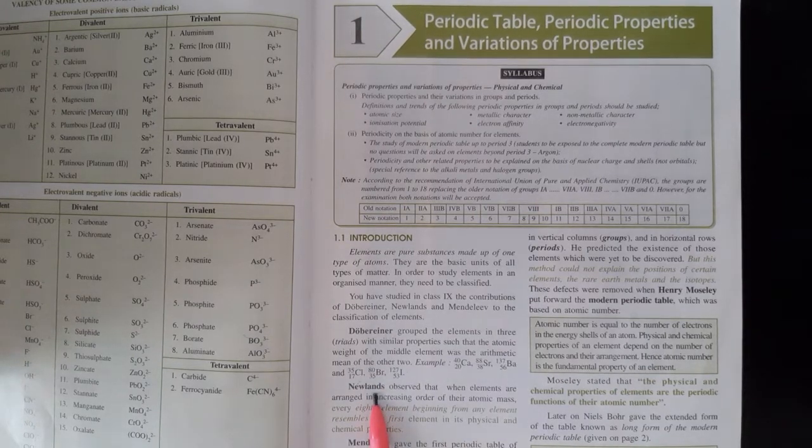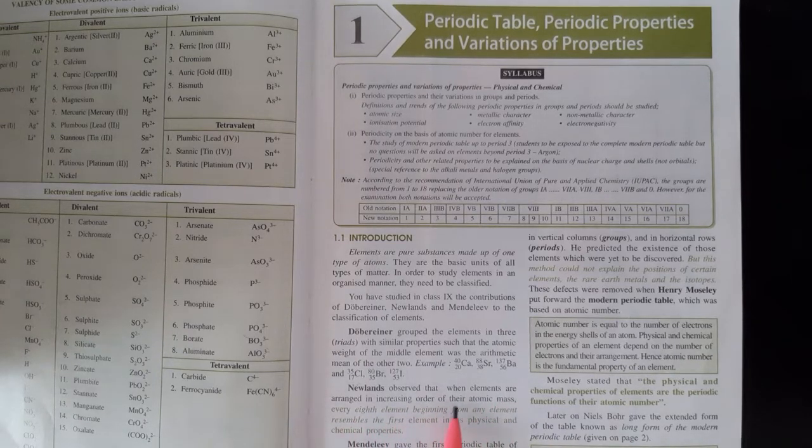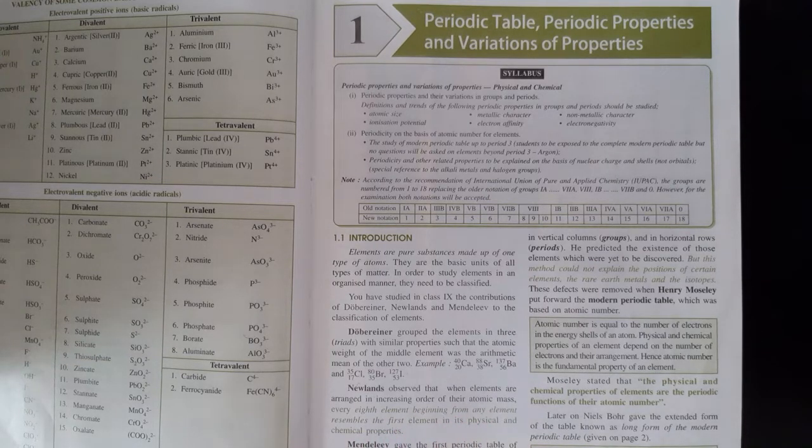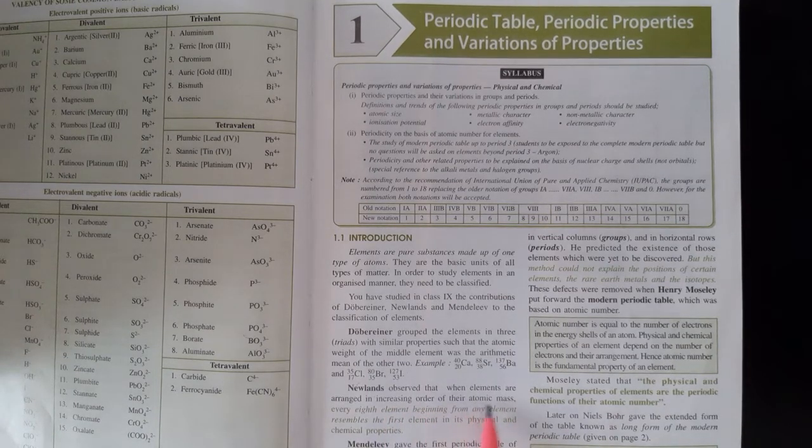Next, Newlands. Newlands observed that when elements are arranged in increasing order of their atomic mass - he saw that if we arrange elements in increasing order, increasing order means from smaller to larger. 2, then 4, then 6. Increasing order. But increasing order of what? Atomic mass.